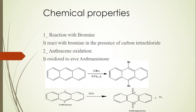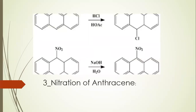Now, the chemical properties of Anthracene: number one is the reaction with bromine, and number two is the oxidation of Anthracene. In the first reaction, three rings of Anthracene are heated in the presence of carbon tetrachloride to yield a new compound. In the oxidation reaction, Anthracene is oxidized to Anthraquinone with release of hydrogen. There is also a nitration of Anthracene: heat Anthracene with hydrochloric acid to get HCl-Anthracene, then treat with NaOH and H2O to obtain the nitration product.